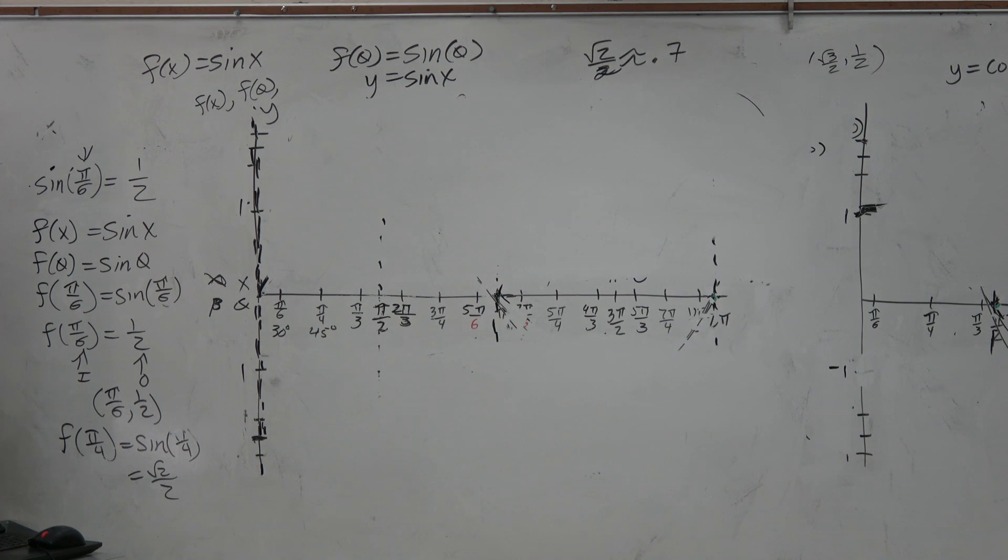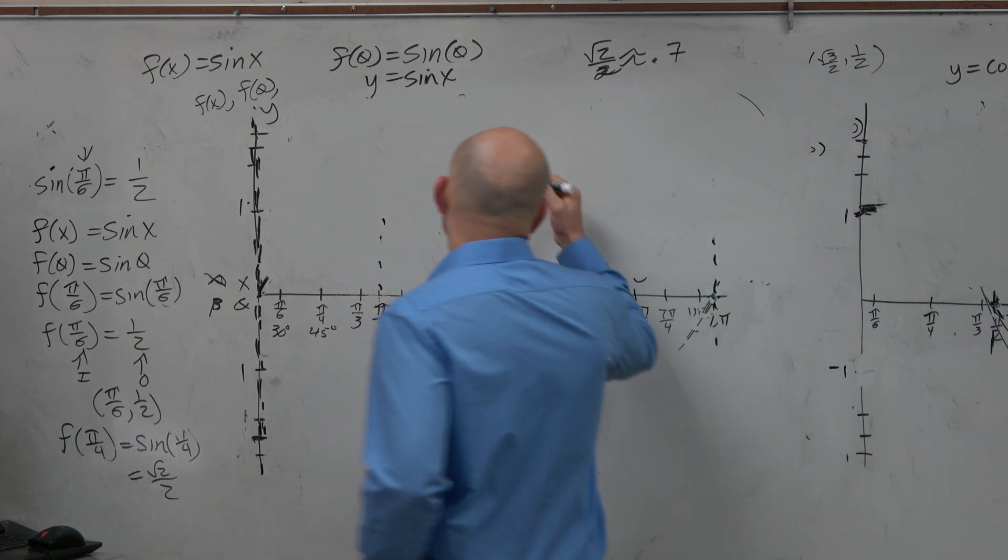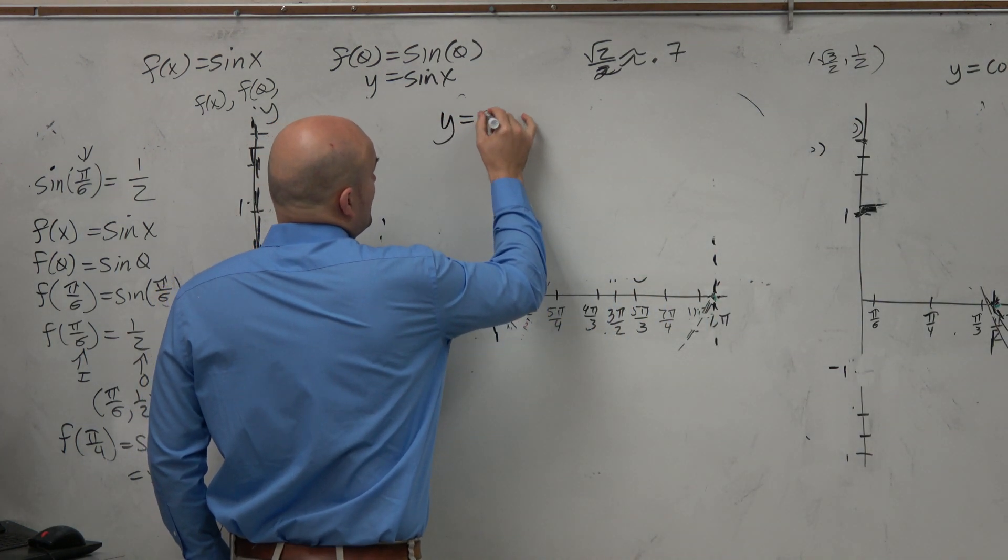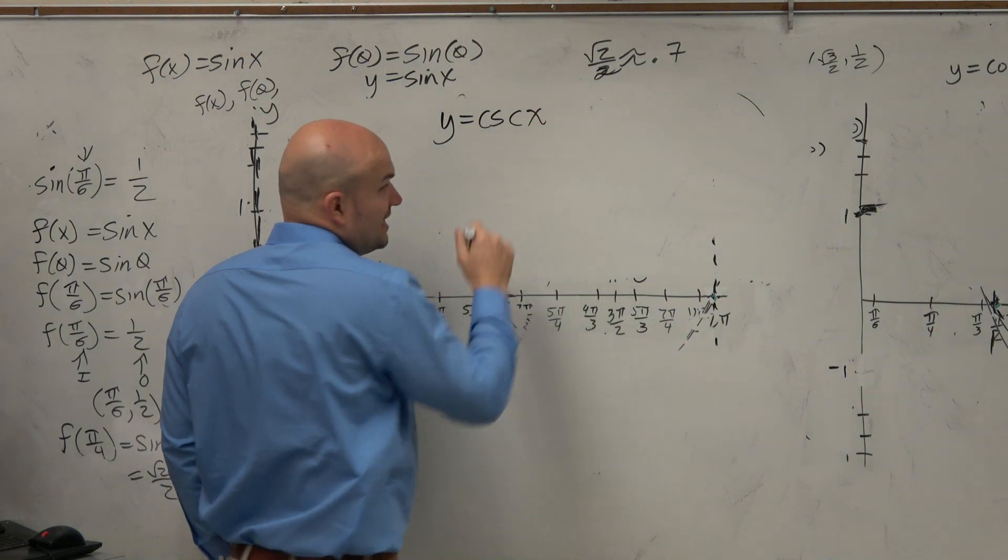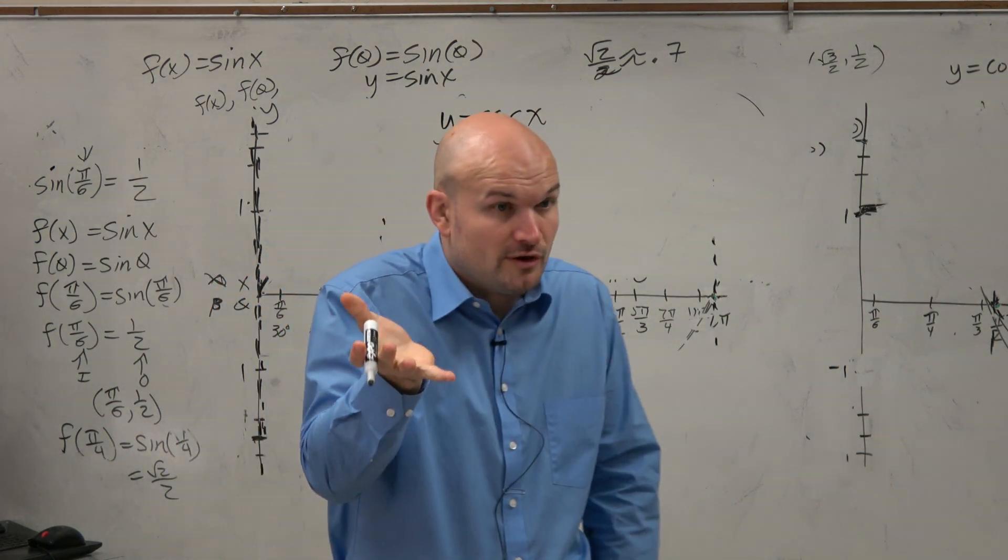The main idea when we look at the sine graph, or the main important thing if we want to graph y equals cosecant of x, is to look at what we understand most about cosecant, and that would be the reciprocal function sine.